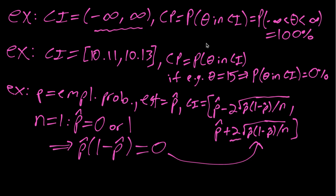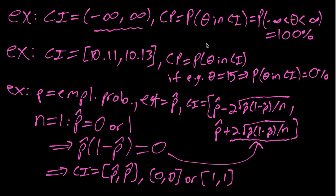And what that means is that the width of the interval, which has this p hat times 1 minus p hat term over here, that whole term here is going to become 0. So then our confidence interval is just p hat, p hat. So it's either 0, 0 if our individual is not employed or 1, 1.